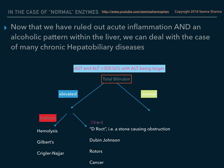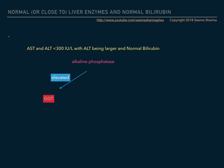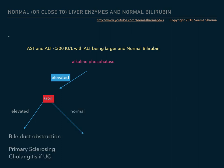If the bilirubin is normal, you look at the alkaline phosphatase. At this point, the AST and ALT are less than 300 with a normal ALT pattern and bilirubin is normal. If alkaline phosphatase is elevated, you then look at the GGT. If the GGT is also elevated, you're thinking bile duct obstruction. If the patient has been previously diagnosed with ulcerative colitis, the likely diagnosis is primary sclerosing cholangitis, given the known association between ulcerative colitis and primary sclerosing cholangitis.